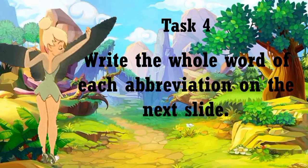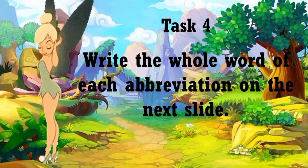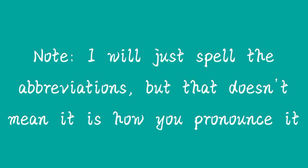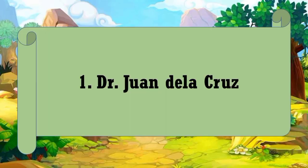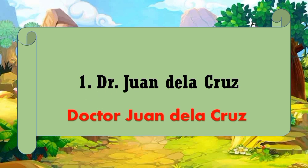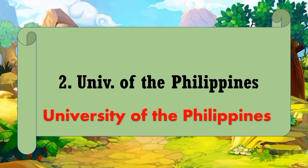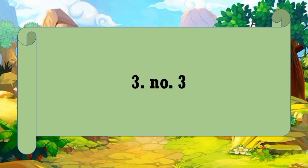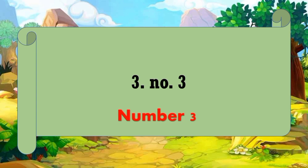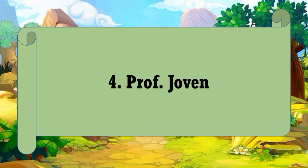For Task 4, write the whole word of each abbreviation on the next slide. Take note, I will just spell the abbreviations but that doesn't mean it is how you pronounce it. Number 1 is Dr. Juan de la Cruz — the answer is Doctor Juan de la Cruz. Number 2, Univ of the Philippines — the answer is University of the Philippines. Number 3, Prof. Joven — the answer is Professor Joven.